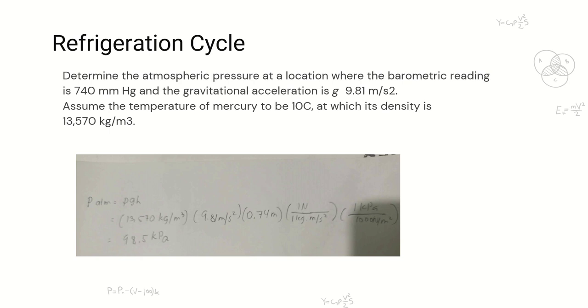Assume the temperature of mercury to be 10°C at which its density is 13,570 kg/m³.